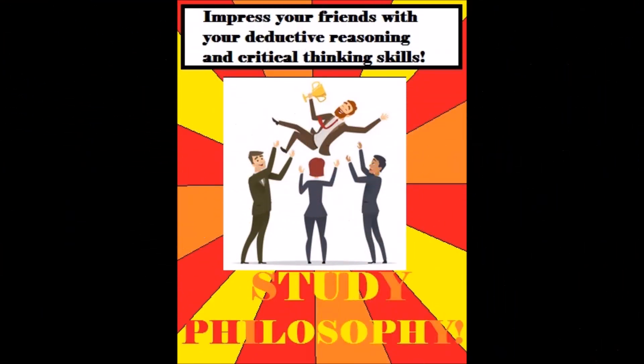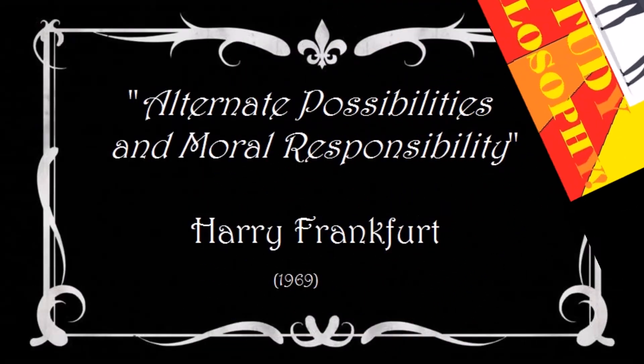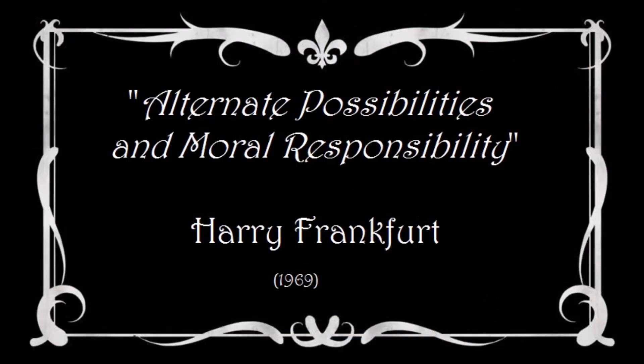In this brief video, I am going to discuss Harry Frankfurt's classic counterexample to the widely accepted model of human freedom and moral responsibility in his 1969 work, Alternate Possibilities and Moral Responsibility. Let's get started.